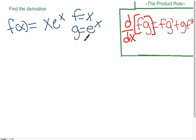So f times g prime plus g times f prime. So basically it's x times e to the x. And we all know the derivative of e to the x, it's just e to the x plus g times f prime.